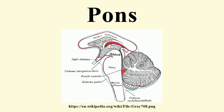This white matter includes tracts that conduct signals from the brain down to the cerebellum and medulla, and tracts that carry the sensory signals up into the thalamus. The Pons in humans measures about 2.5 cm or 1 inch in length.